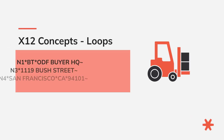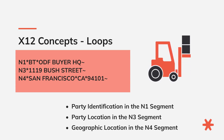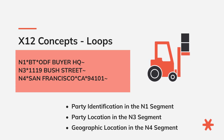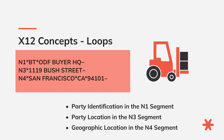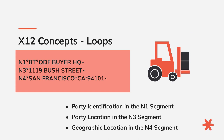Let's look at an example. In an 850 purchase order, there is an address loop, which in this example contains information about the party identification in the N1 segment. Here we have BT, which means the Bill-To party is ODF Buyer HQ. Party location in the N3 segment gives the street address. And geographic location in the N4 segment provides the city, state, and postal code.